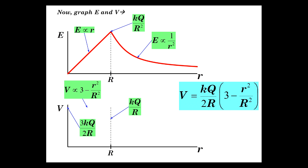And moreover, at R, when little r is big R, then this is 1. 2 minus 1 is 2. 2 over 2 is 1, KQ over R. It acts like a point charge with radius big R. And so this is what it looks like approximately.